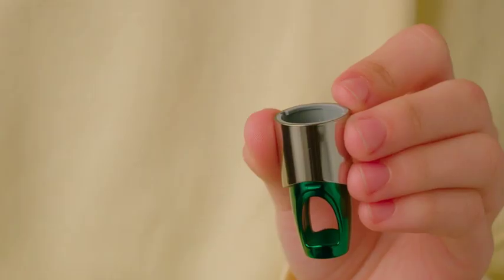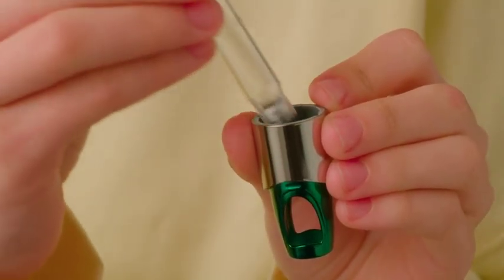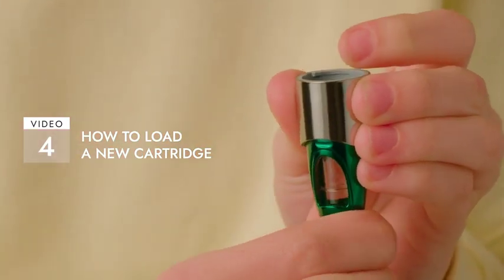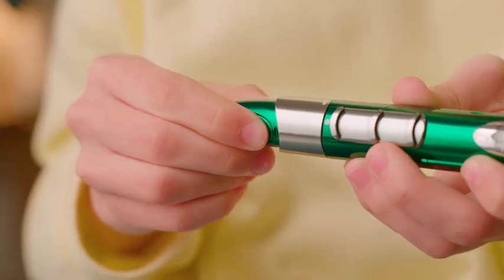Discard the empty cartridge and put a new one into the locking ring, as described in video 4. You can then reattach the locking ring with the new cartridge.